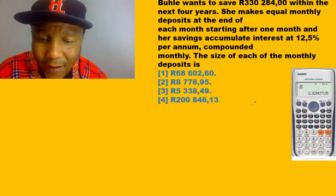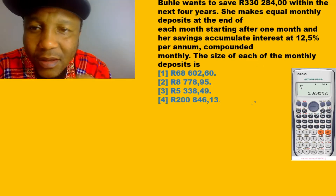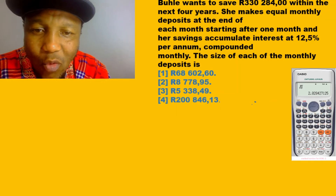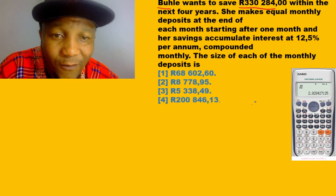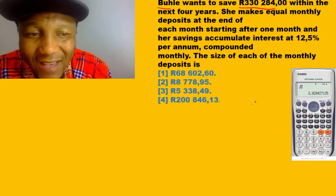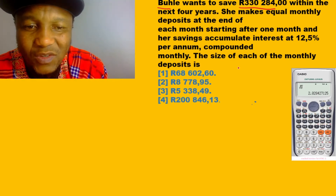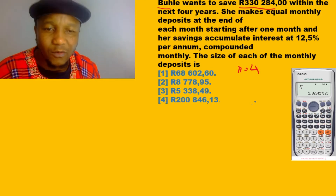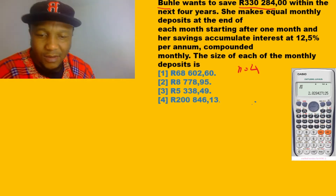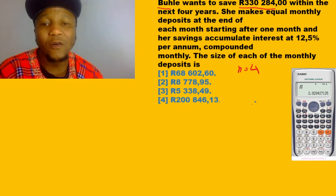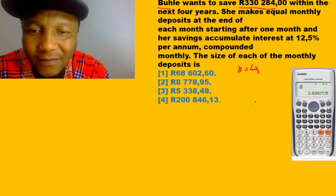Let's look at the question. Bootle wants to save this amount — we have R30,000 to R84,000 — over the next four years. So our time, which we can represent using n, is equal to four. That's the time period we're working with.